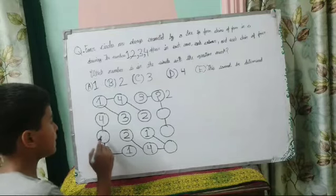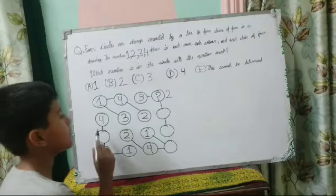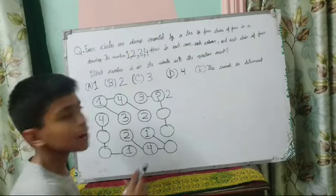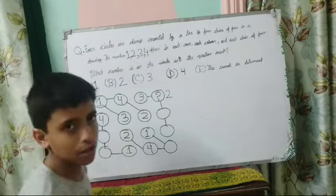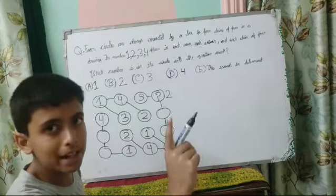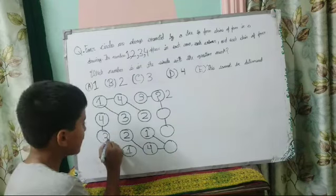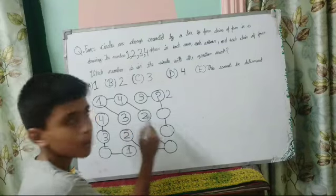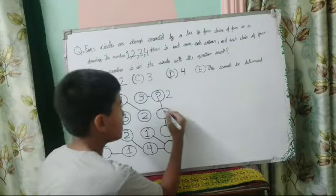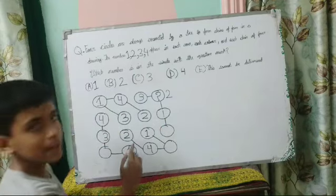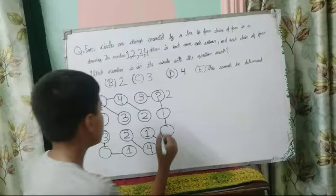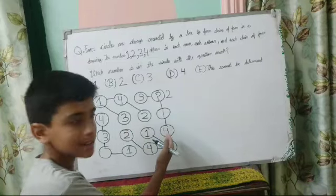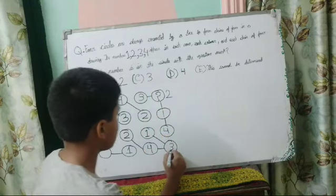Now I am going with this circle. In this circle, 1 and 4 are already occupied, so 1 and 4 cannot come. 2 and 1 are also already occupied, so 2 and 1 cannot come. The only number which can come is 3. Next, 4, 3, and 2 are already occupied in this row, so only 1 will come here. Then 3, 2, and 1 are already occupied in this row, so only 4 will come. Finally, 2, 1, and 4 are already occupied in this column, so only 3 will come here.